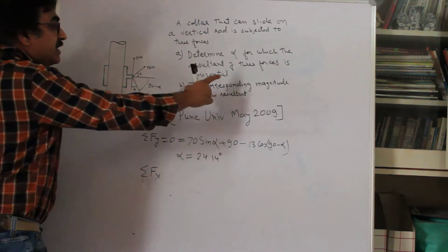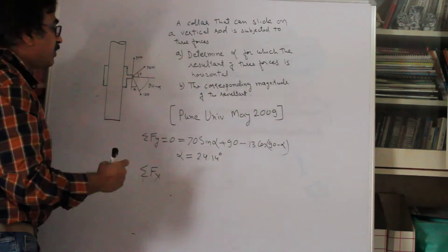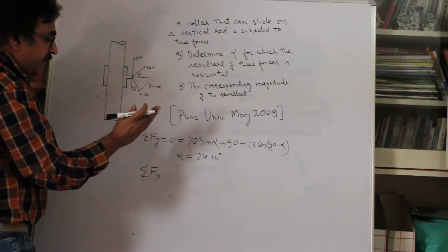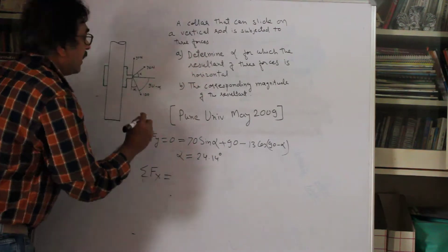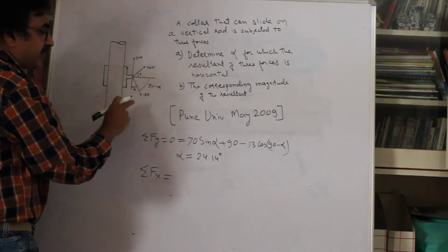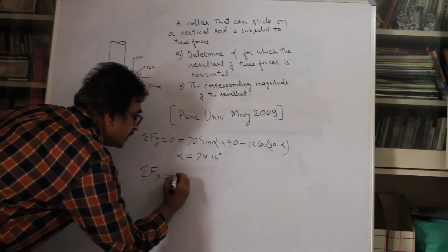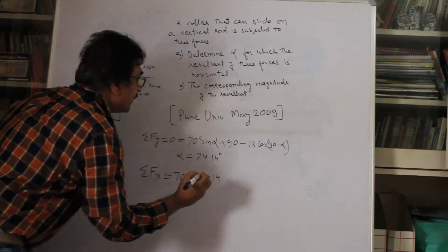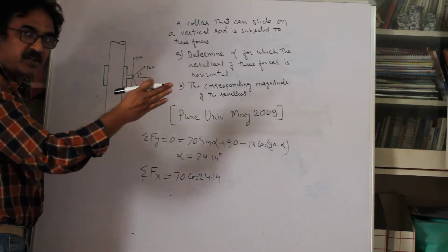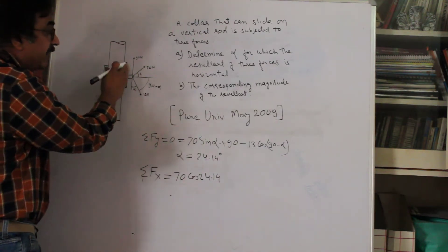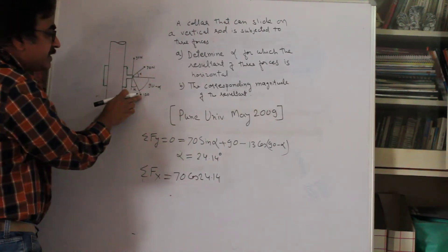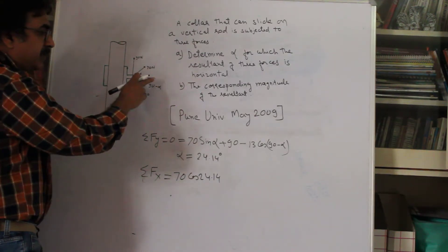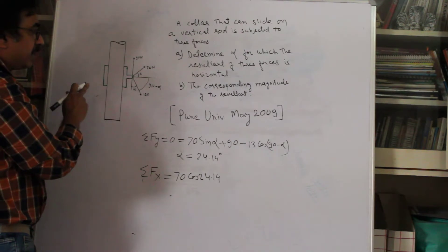To find sigma Fx, resolve all forces in the x-direction. The 70N force contributes 70 cos alpha = 70 cos(24.14°). The 90N force has no horizontal component since it is purely vertical — it makes 90 degrees with the horizontal. The 130N force makes some angle with the horizontal and contributes a horizontal component as well.